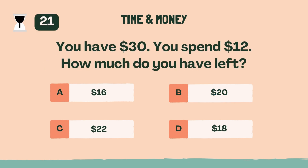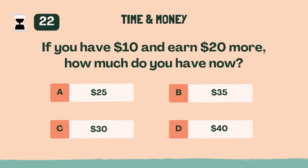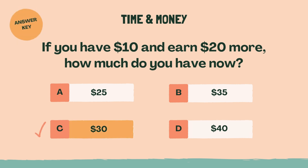You have $30. You spend $12. How much do you have left? D, $18. If you have $10 and earn $20 more, how much do you have now? C, $30.